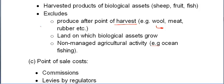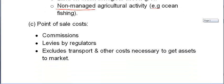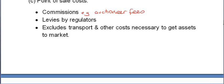These rules only apply to managed agricultural activity. If it's non-managed — such as ocean fishing where no farmers are planting crops — that would be excluded. When we talk about fish, we're talking about managed fish farms. Point of sale costs are the commissions we would pay to an auctioneer. If you think about how we sell sheep, you'd normally go to a market and the auctioneer would take a percentage, but we don't include transportation costs.